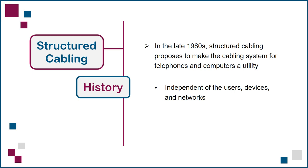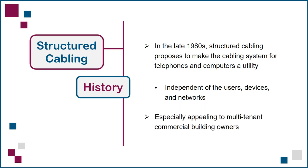Now, if you wanted to buy a new telephone or computer system, everything would plug into the existing telecommunications outlets, so you only had to worry about the price of the new system. No new cabling needed, just like with electrical outlets and the devices that plug into them. This was especially appealing to multi-tenant commercial building owners, who couldn't know ahead of time what future tenants would require, and would love to avoid installing and reinstalling different types of cables on various floors as tenants came and went.